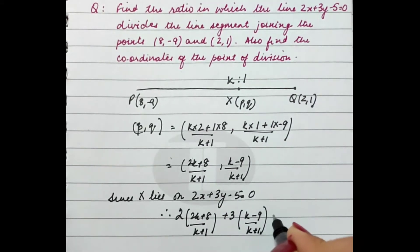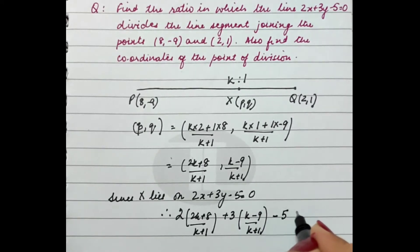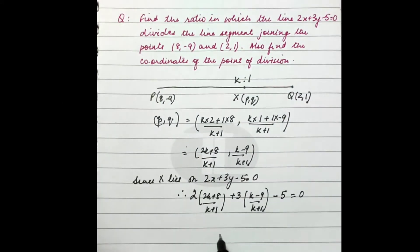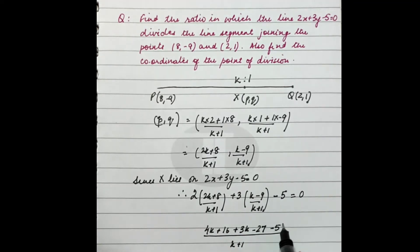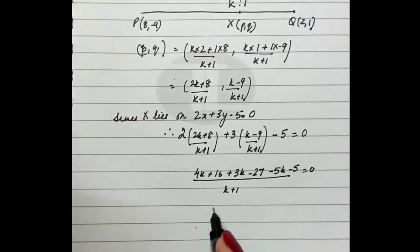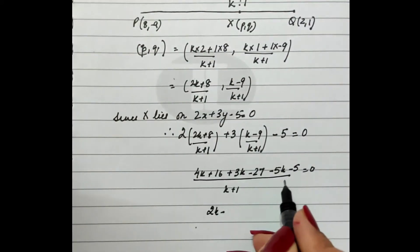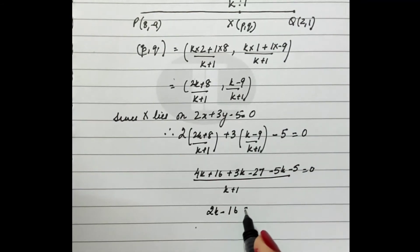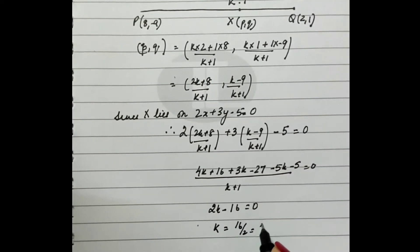Taking LCM as k+1, we get 4k + 16 + 3k - 27 - 5k - 5 = 0, which gives 2k - 16 = 0, so k = 8.